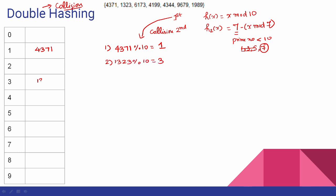So the third location is 1323. Next: 6173 mod 10 — this value is 3. But location 3 already has one element, so there is a collision. Here we use the second hash function. So h2 of x is 7 minus 6173 mod 7.